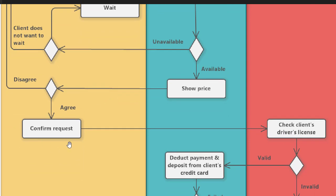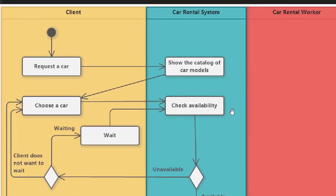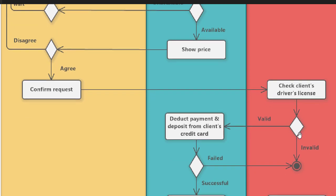When the client confirms the request, the activity moves to the car rental worker. The worker checks the client's driver's license — whether the client has a valid license or not. This is another condition in the diagram.